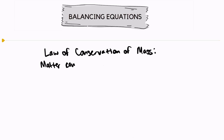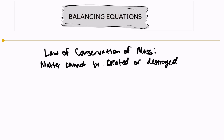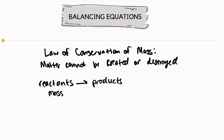Matter cannot be created or destroyed, which means that when we have a chemical equation — something like reactants yields products — the total mass on the left-hand side of my equation has to equal the total mass on the right-hand side of my equation.